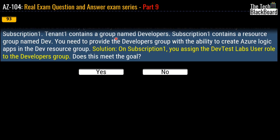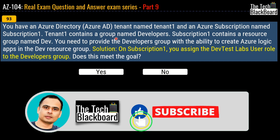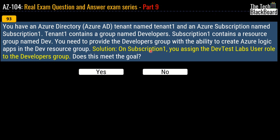Question 93 is again a variation of questions 91 and 92, with the same scenario, but the solution here says that on Subscription 1 you assign the Dev Test Lab User role to the Developers group. Does this meet the goal? The answer for this question is no — it does not meet the goal.